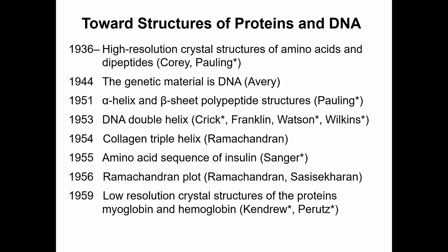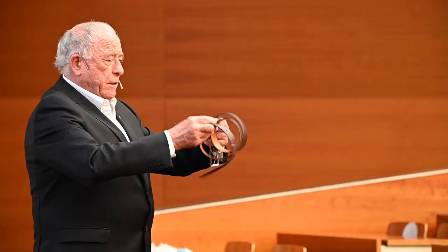In 1951, Pauling used data obtained from crystallographic studies of dipeptides to model the alpha helix and the beta sheet secondary structures in proteins. An alpha helix is formed by folding a chain in one way, and a beta sheet is best illustrated by a hairpin structure. In 1953, the DNA double helix model was proposed by Crick, Franklin, Watson, and Wilkins. This is not an atomic structure — like the structural proteins before, it is a model based on fiber diffraction with insufficient information to construct a full structure.